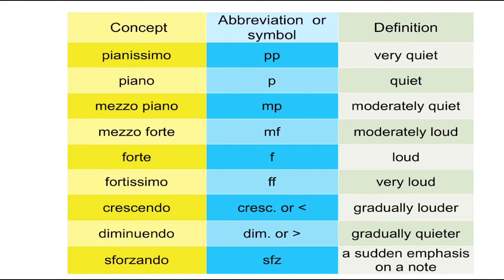And lastly, sforzando, sometimes abbreviated sfz, and that's a sudden emphasis on a note. Just one note suddenly gets an accent, an emphasis on it, louder than the other ones. You can imagine a trumpet, for example, playing sforzando, just really hitting a note hard, and then carrying on as normal with the rest of the notes.